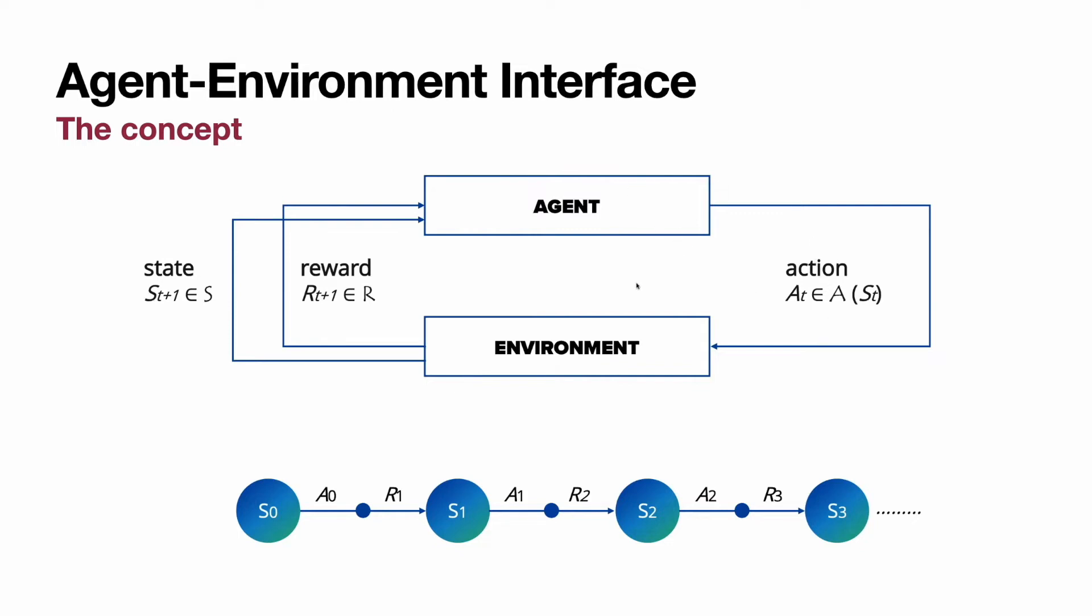In other words, interacting with environment so that the agent can collect the maximum possible sum of rewards. If we put this interaction into the sequence, we will see the sequence of states, actions taken, and rewards received.